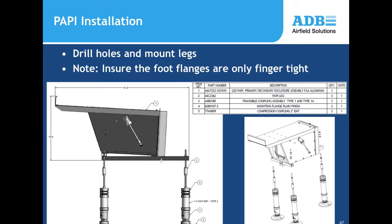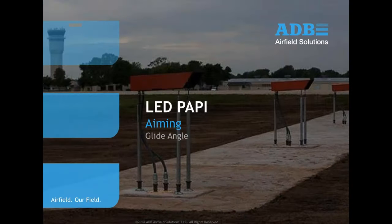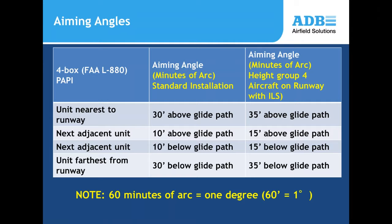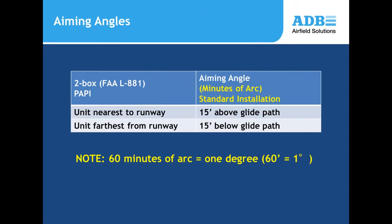Mount the PAPI and aim it based on the glide slope requirements for the airfield. For both FAA and ICAO markets, the light unit closest to the runway is set 30 minutes (0.5°) above the glide path; the next unit is 10 minutes above; the next is 10 minutes below; and the unit farthest from the runway is 30 minutes (0.5°) below the glide path. For a two-box installation, one unit is set 15 minutes above and one 15 minutes below the glide path.